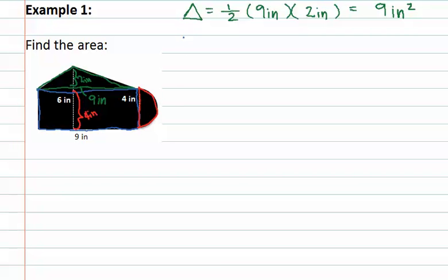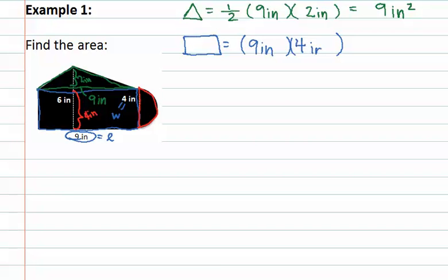Next, let's look at the rectangle. The rectangle's formula is length times width. We must determine where the length and the width are. We see that the length is nine inches, and the width is four inches. We can now plug these into our formula, doing nine inches times four inches, which will give us thirty-six inches squared.